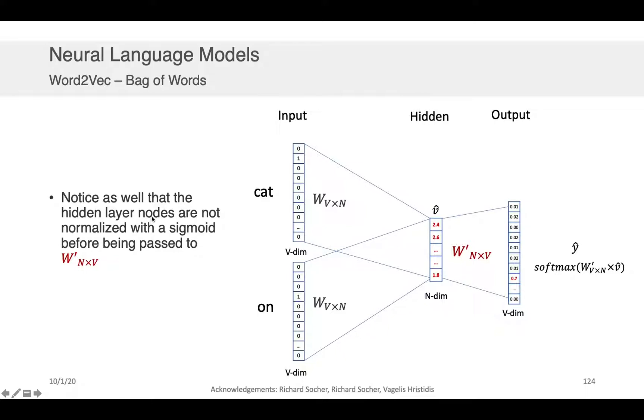Okay, notice that in this representation for Word2Vec that the hidden layer nodes are not necessarily normalized with a sigmoid before being passed. That is, we come up with one transformation here, this is just a linear transformation, right, as a function of this input vector, and we sum that transformation to create the vector V, which we then, without doing any sigmoid kind of transformation on it, we just pass it to another set of linear transformations before finally performing the softmax out at the end. Okay, I want to make that clear because...